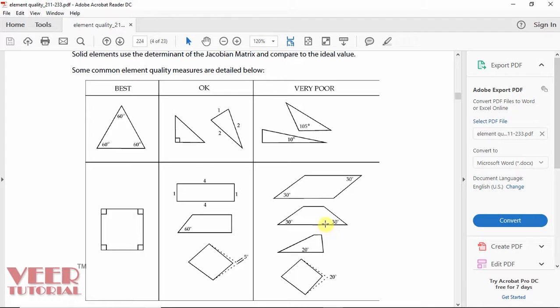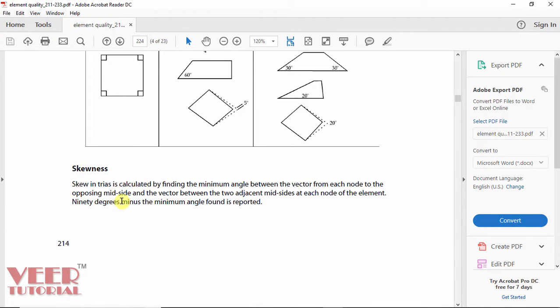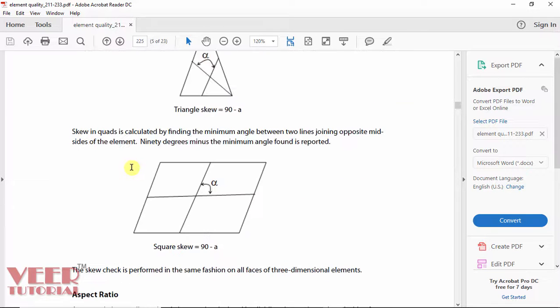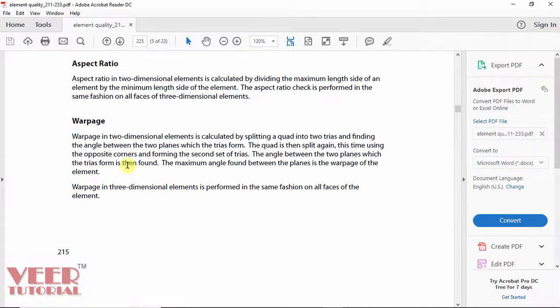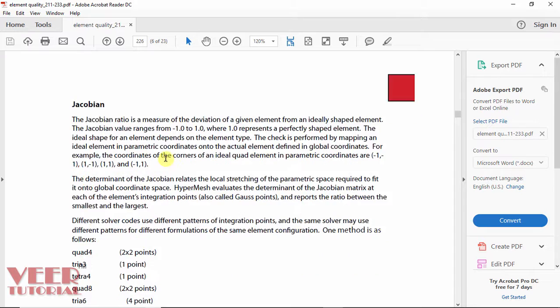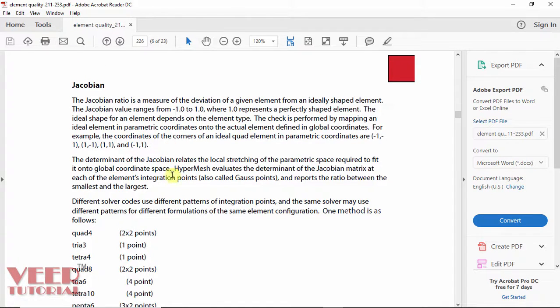So you can read this PDF, here definitions are given of skewness, then aspect ratio, warpage, Jacobian. So you can read it, what is the actual meaning of Jacobian.